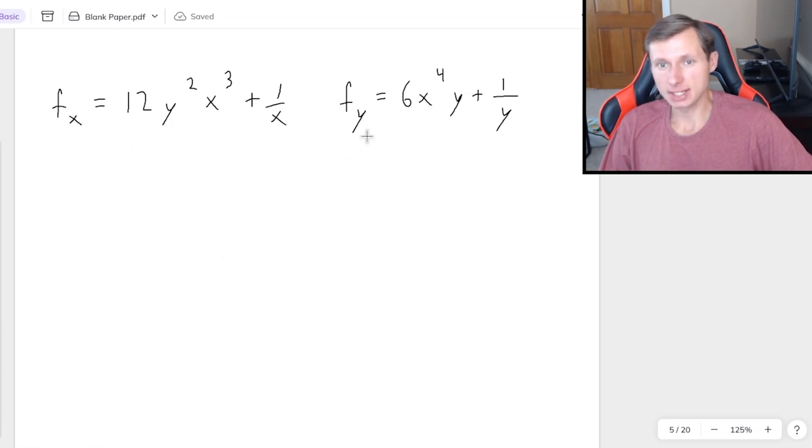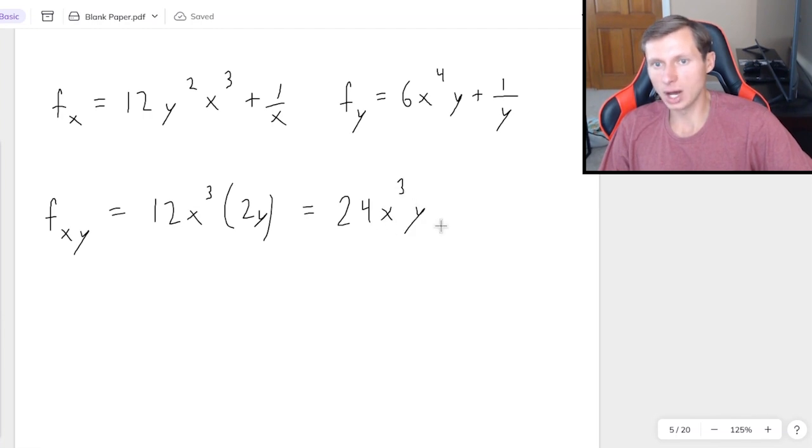So as a reminder, here's fx and fy. If I want to find fxy, I'm really dealing with fx, the left one, and then taking the derivative as if it were y. Which means now x cubed is the coefficient. And following the power rule on y squared to y. And the derivative of 1 over x is just 0 because it doesn't even have a y in it. So then it looks like I get 24x cubed y for fxy.